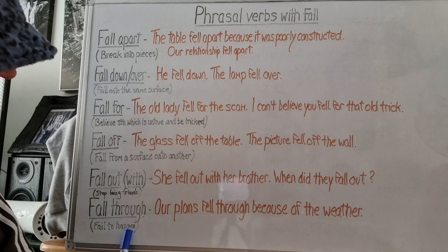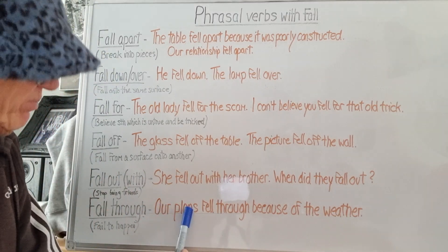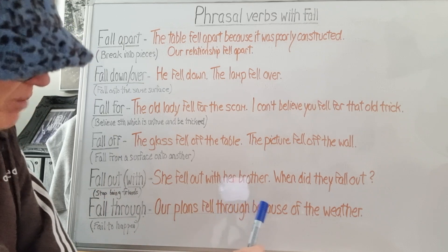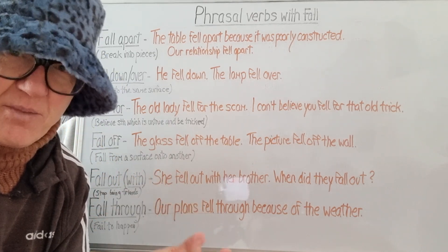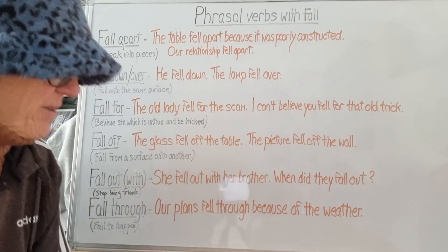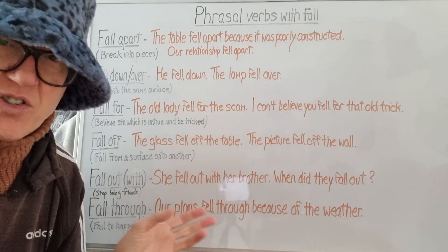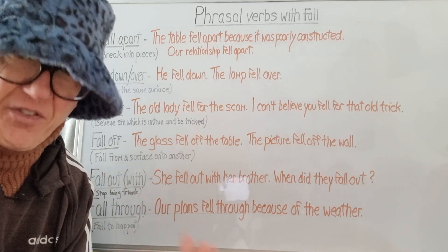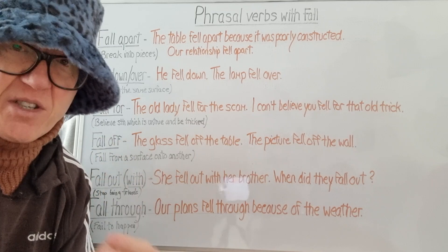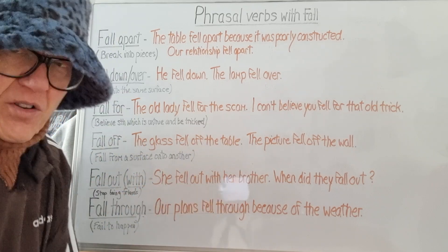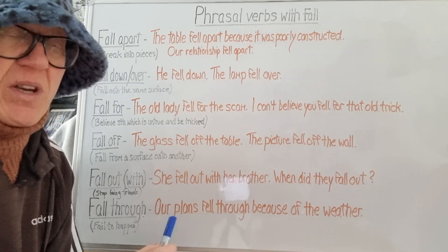'Fall through' is to fail to happen — you had plans and they didn't happen, they fell through. Our plans fell through because of the weather. We had plans to go on a trip somewhere to enjoy the sun, maybe to a beach, but the weather was really bad so our plans fell through. It's usually not your choice: if you choose not to do something, you don't say 'our plans fell through' — you say 'we decided not to do it.' But if something else causes your plans to be disrupted, cancelled, or postponed, then you use 'fall through.'